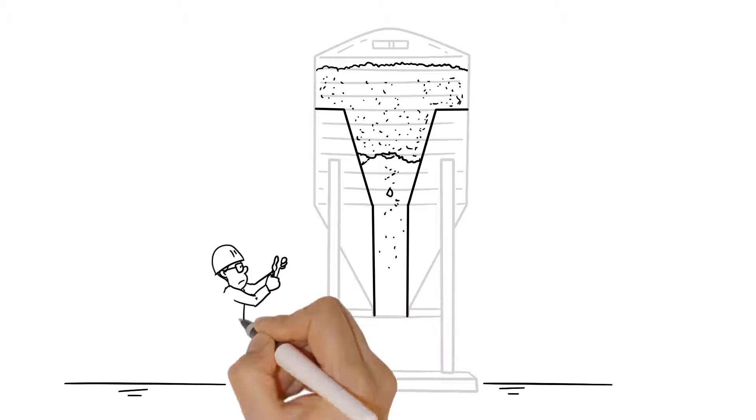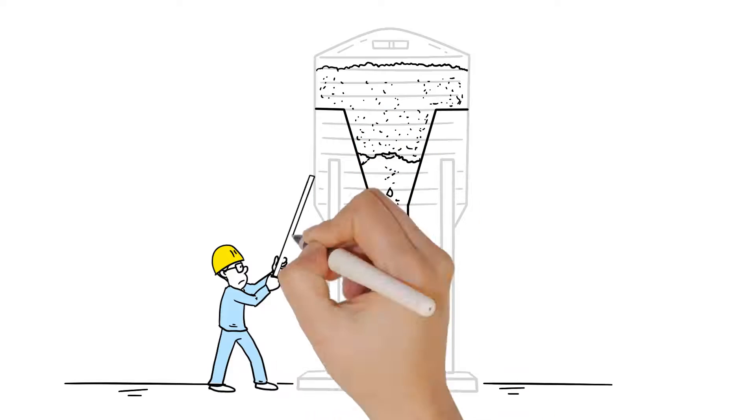The remedy is usually banging on the silo to get the material moving again, either by hand or by using mechanical hammers that need to be installed and maintained.